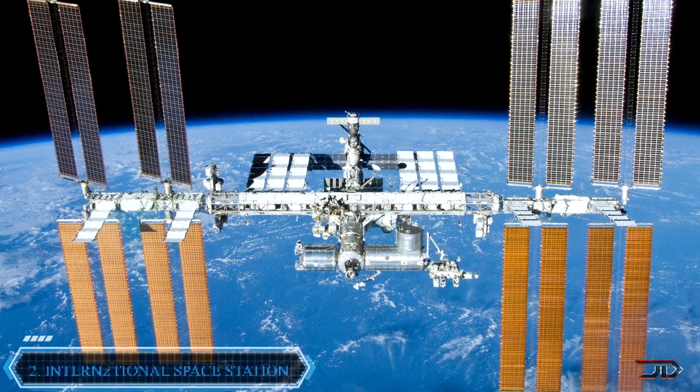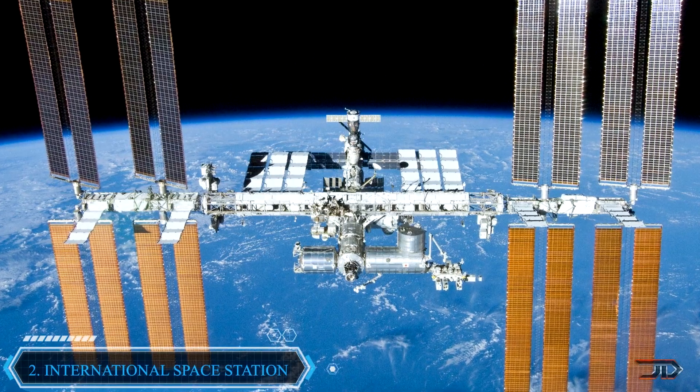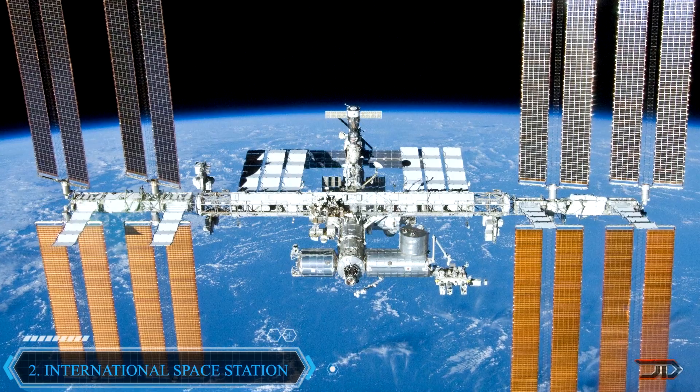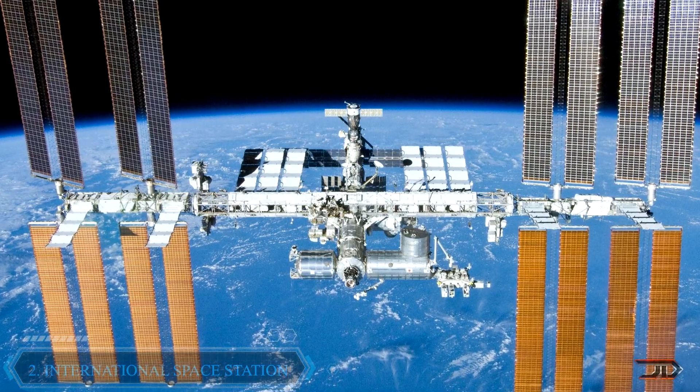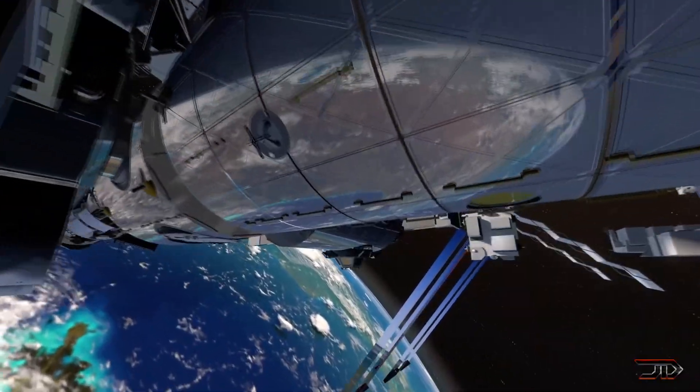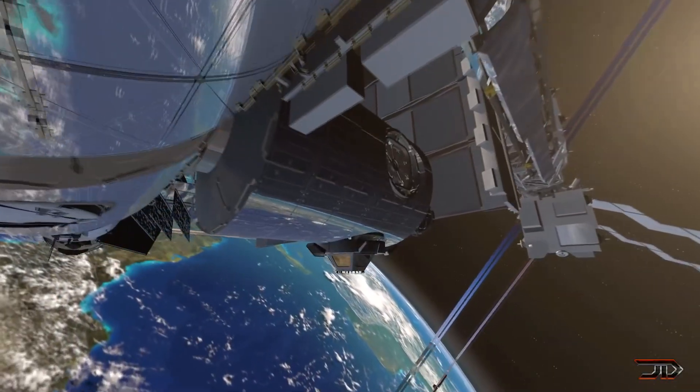At number two, the ISS. One of the most advanced and remote research facilities is not even on Earth, and I certainly think that this is a foreshadowing of where classified projects can take place in the future. Almost 3,000 experiments have taken place on this space station, with most of them tied to microgravity effects.